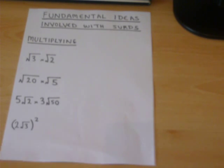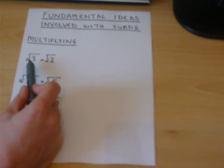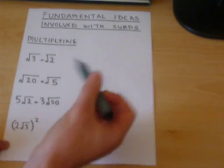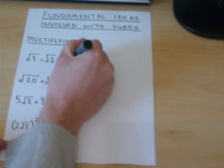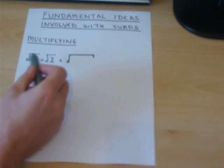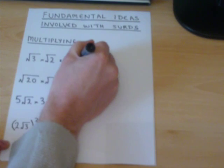So for example, square root of three times square root of two, three times two is six.